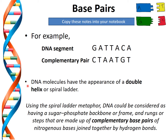DNA molecules have the appearance of a double helix or spiral ladder. Using the spiral ladder metaphor, DNA can be considered as having a sugar-phosphate backbone which represents the frame of the ladder, and the rungs or steps of the ladder are made up of the complementary base pairs joined together by hydrogen bonds.